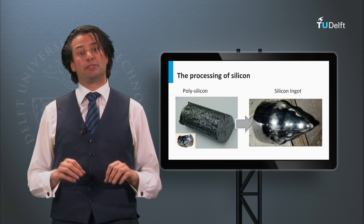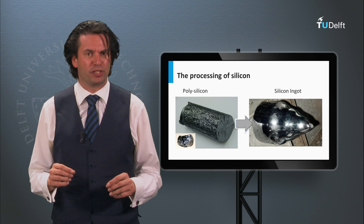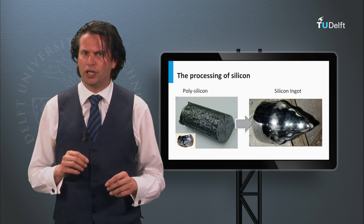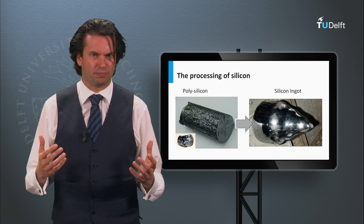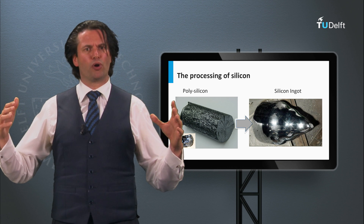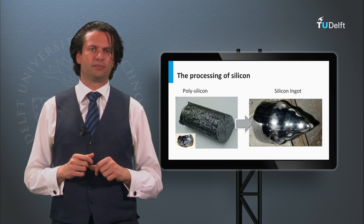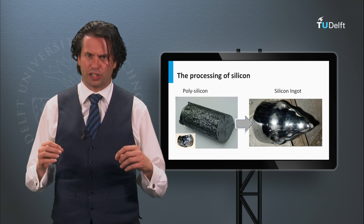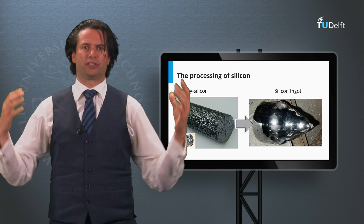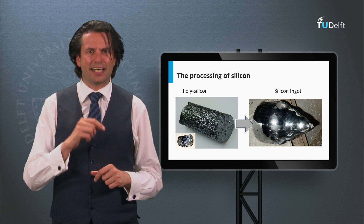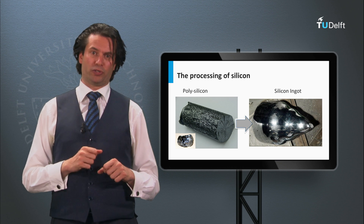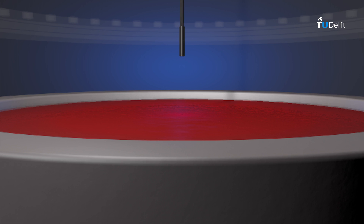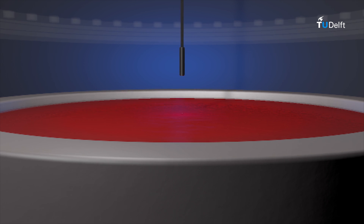The next step is making wafers out of polysilicon. First we consider two methods to make monocrystalline silicon ingots — large blocks of crystalline silicon consisting of one single crystal. In the next animation you will be introduced to the Czochralski processing method, developed by Polish scientist Jan Czochralski in 1918.